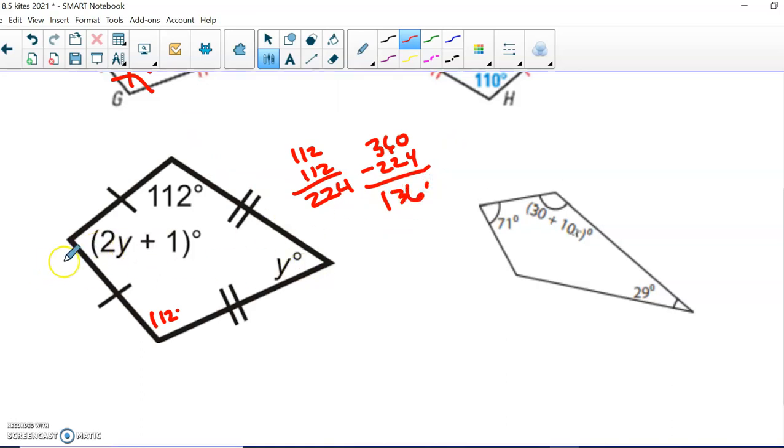And again, don't assume these two angles are congruent. They're not. It says we have exactly one pair of congruent sides. That's our 112. But what I do know is the sum of this angle plus this angle gives us 136. So we're going to do that. I'm going to say 2y plus 1 plus y gives us 136.